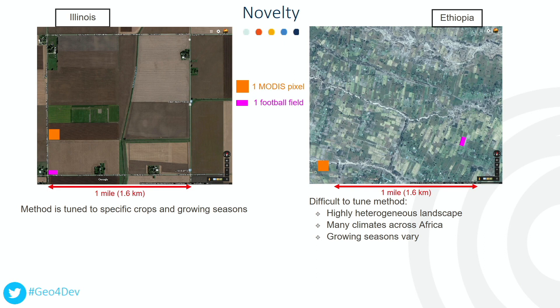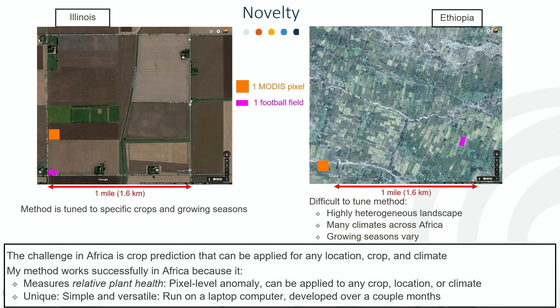These images show farm fields in Illinois and Ethiopia at the same resolution. In Illinois, the method can be tuned for specific crops and growing seasons because of large farm fields and high data availability. In Africa, it is very difficult to tune the method because of a highly heterogeneous landscape, many climates, crops, and growing seasons across the continent. The challenge in Africa is crop prediction that can be applied for any location, crop, and climate. My method worked successfully because it measures relative plant health on a pixel-level anomaly without the use of a crop mask, so it can be applied to any location, crop, or climate. It is unique because it's simple and versatile.